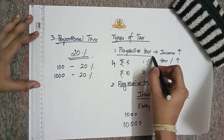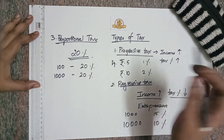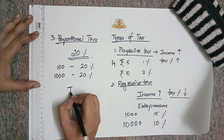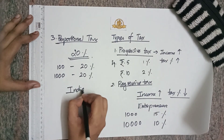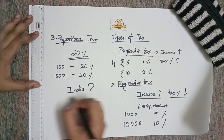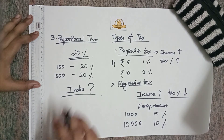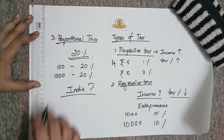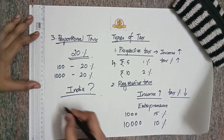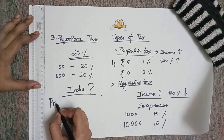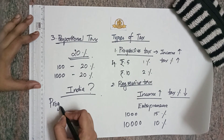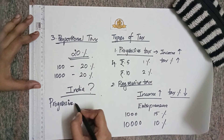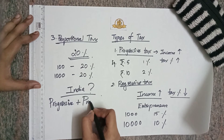So these are the three types of taxation: first is progressive, second is regressive, and third is proportional. Now the question is — what method does India follow? In India, we follow both progressive as well as proportional tax — a combined approach of progressive plus proportional.